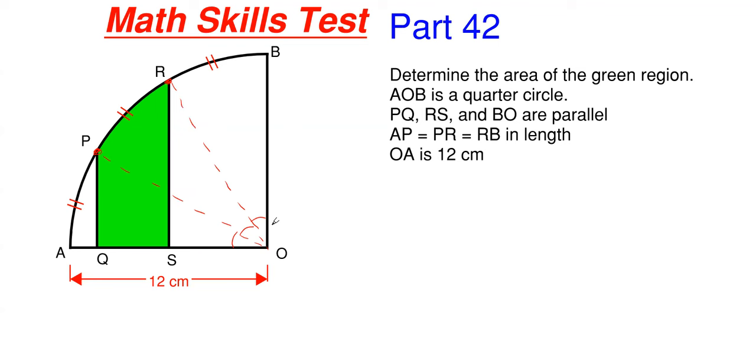Well since O is a total of 90 degrees since it is a quarter circle, that means that each one of these is going to be exactly 30 degrees here.